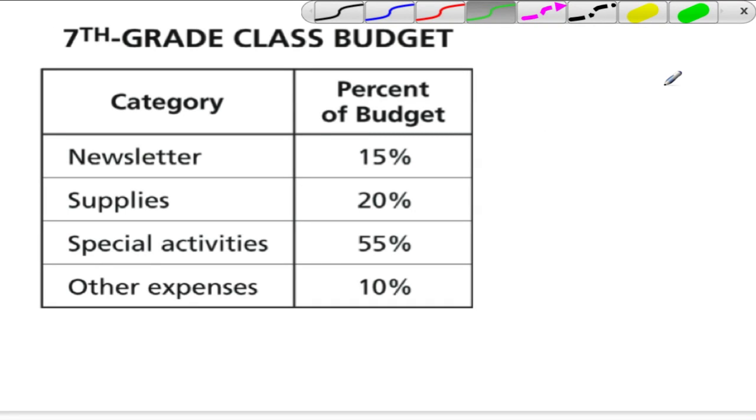When you're dealing with a circle graph, you're dealing with a circle, which means you have a 360-degree angle to deal with. If you're given categories with percents, you have to turn these percents into degrees that go into the 360 degrees of the circle.